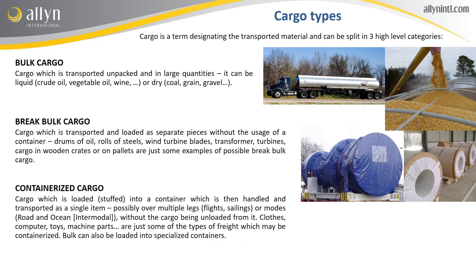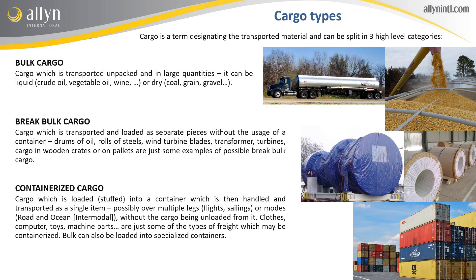And finally, we find the containerized cargo, which is the cargo loaded — or stuffed — into a container, which is then handled and transported as a single item. This is possibly over multiple legs, meaning multiple flights or sailings, or modes — for example first by road, then by ocean — without the cargo being unloaded from the container. More or less any kind of cargo can be loaded into containers, on pallets, in boxes, or loaded directly into the container.